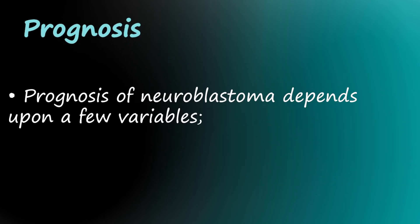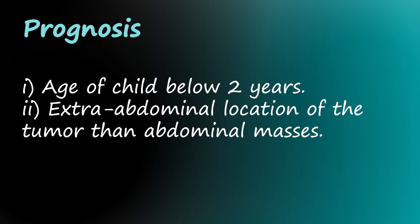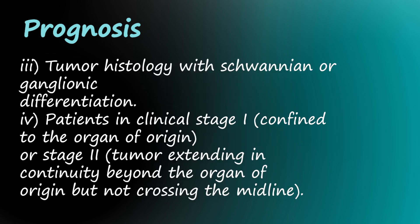Prognosis. Prognosis of neuroblastoma depends upon a few variables: 1) age of child below 2 years; 2) extra-abdominal location of the tumor rather than abdominal masses; 3) tumor histology with Schwannian or ganglionic differentiation; 4) patients in clinical stage I, confined to the organ of origin, or stage 2, tumor extending in continuity beyond the organ of origin but not crossing the midline.